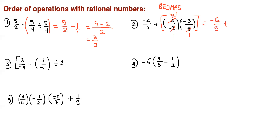Remember: when you multiply two things, if you have an even number of negatives, the answer is positive. So this is going to be positive, the top is going to be 3, and 1 times 1 is just 1. So now we have negative 6 over 5 plus 3. Putting this over 1 and doing common denominator — which is 5 — gives negative 6 plus 15, which is 9. So the answer is 9 over 5.